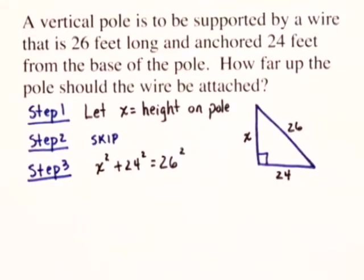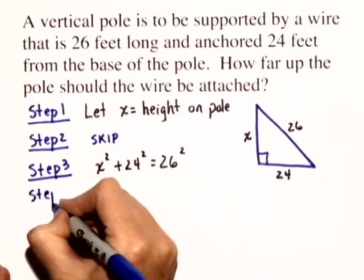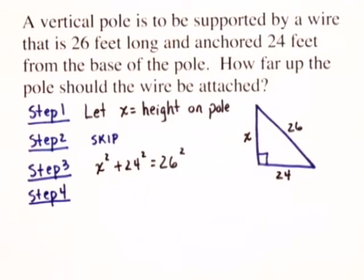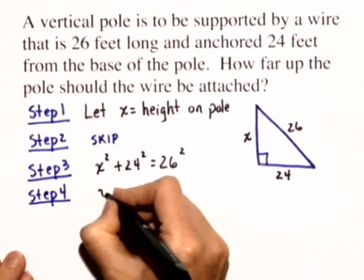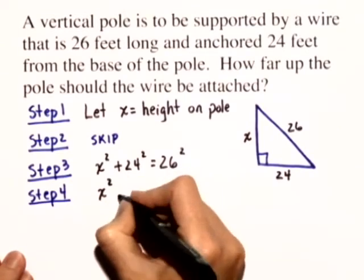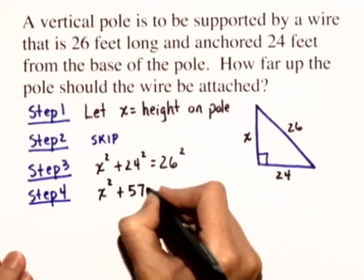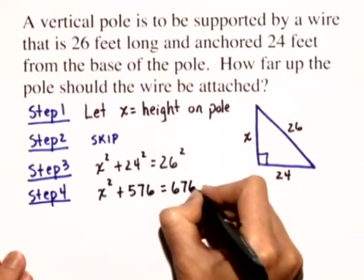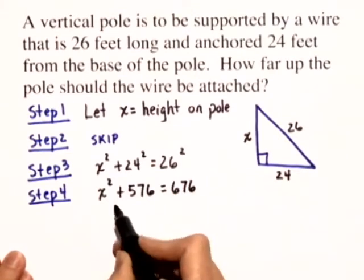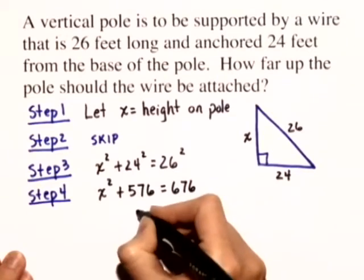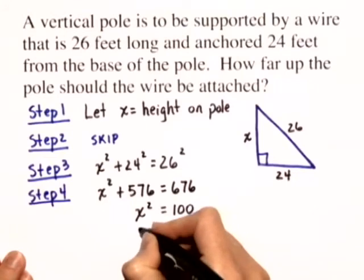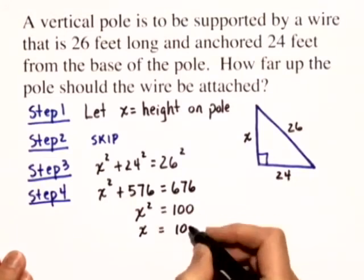Now we're ready to solve this equation. In step 4 we'll solve and we'll get X squared plus 24 squared, which is 576, equals 26 squared, which is 676. If we subtract 576 from both sides we get X squared is equal to 100, or X is equal to 10.